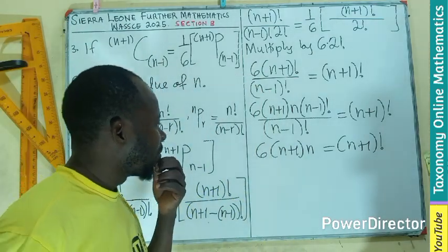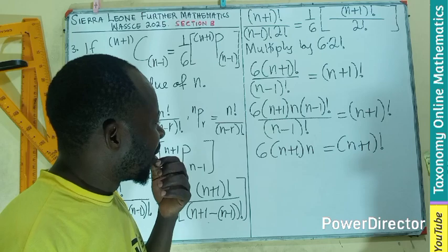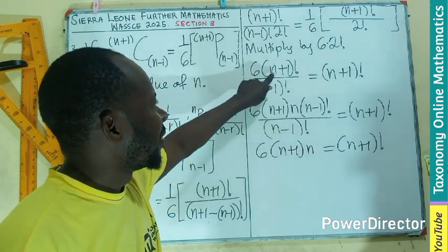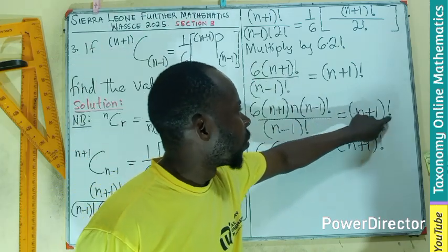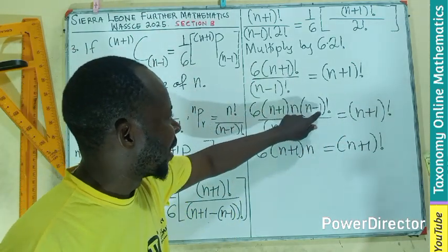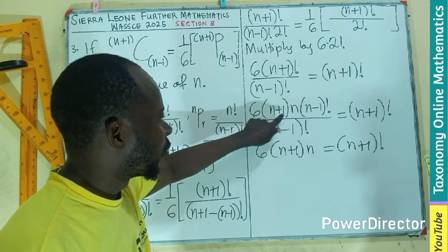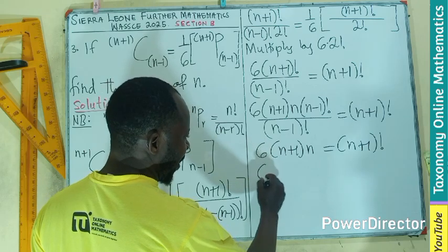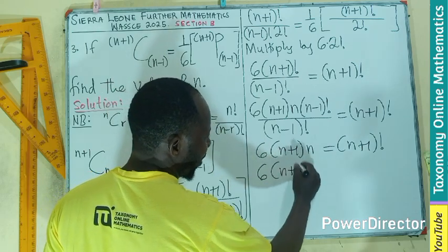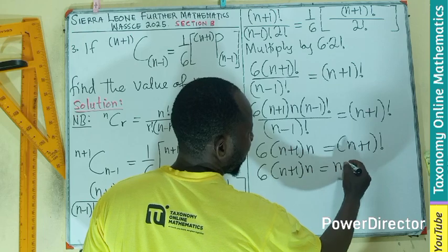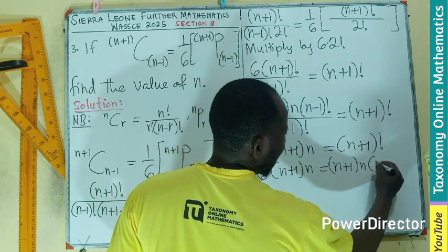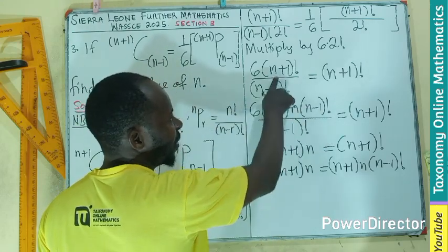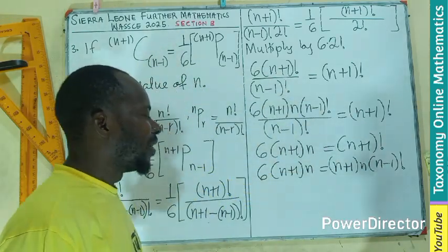So I should be left with only 6 times n+1 times n equals to n+1 factorial. What can I do from here? If you expand, you get quadratic. Remember, this is n+1 factorial. So if I expand it, I will get common term. So let's see if what I'm seeing will work. n+1 times n equals to n+1 times n times n-1 factorial. Right away from here, the whole of this is equals to what we are seeing here. So we are doing the same thing.